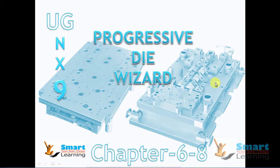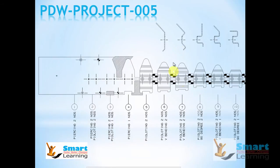Hi, we are in Chapter 6.8 and in this chapter we are going to do a Progressive Die for Project 005. This is the strip layout of Project 005.